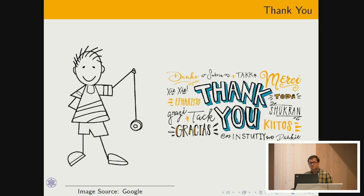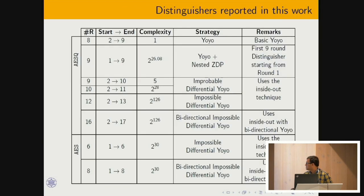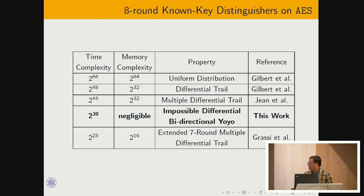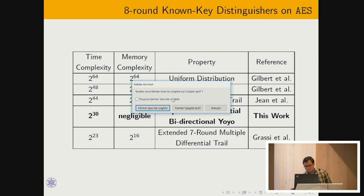Q&A: A question was asked about whether the security of ASK could be improved by modifying the mixing layer between AES rounds — specifically, whether the wire mixing is a weakness exploited in the attack, or optimal. The presenter responded that they have not looked into that yet but would certainly consider it.